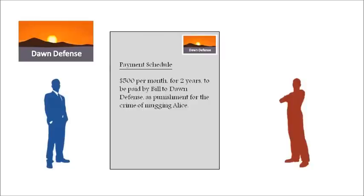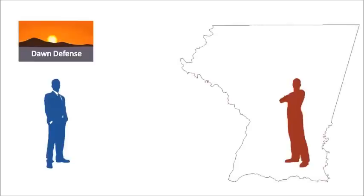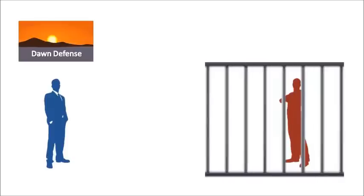If Bill is unemployed, they may insist on taking a more active role in his life, and may force him to work at a place of their choosing. If Bill is dangerous or cannot be trusted to make the payments, they may restrict his movements to a certain region — or, as a last resort, to a certain building: a secure workhouse where criminals are held while they pay off their debts to their victims and serve their punishment.